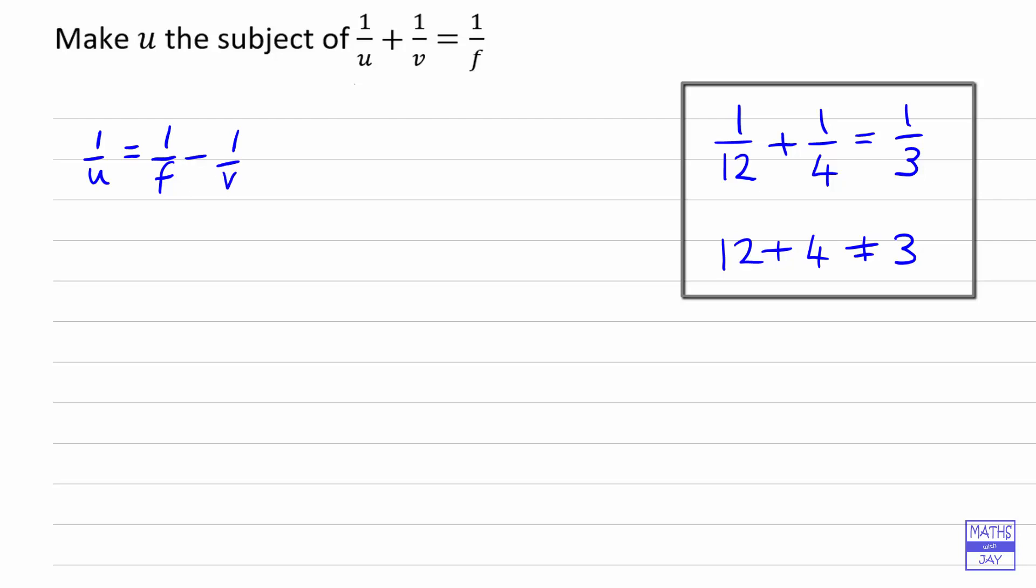I'm going to show you another numerical example. Let's look at two thirds. Well that's the same as, for example, eight twelfths. And I could turn both of those fractions upside down, so three halves is the same as twelve eighths. So that is okay, to turn both sides of an equation upside down.